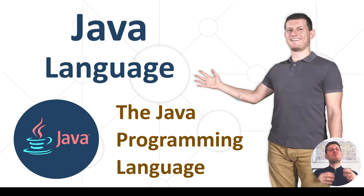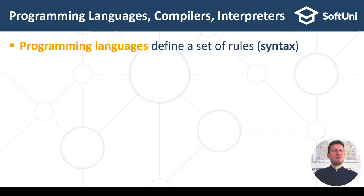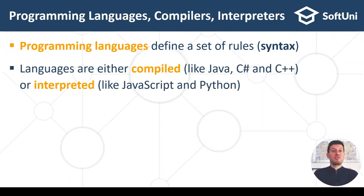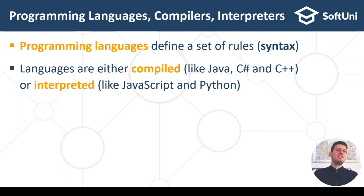In this section I will talk about the Java programming language and the Java platform. Let's start from the concept of programming languages. Programming languages define a set of rules — some kind of syntax to write programs. Languages could be either compiled, like Java, C#, C++, Go, and others, or interpreted, like JavaScript, Python, and some other scripting languages.